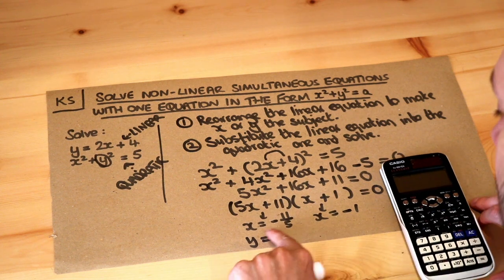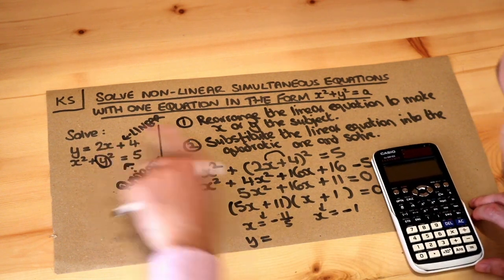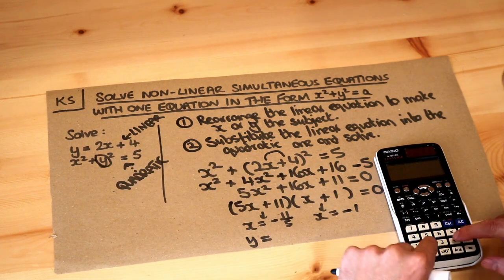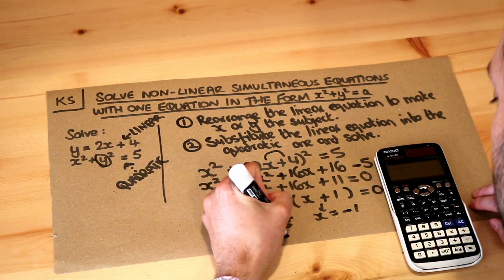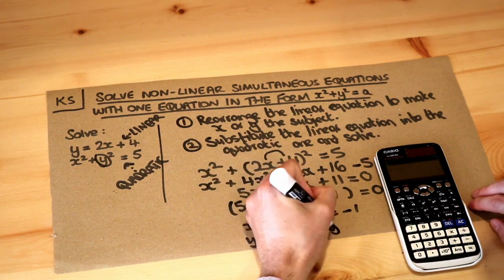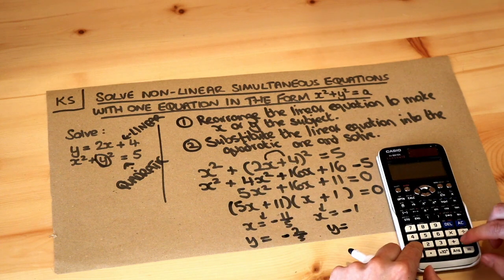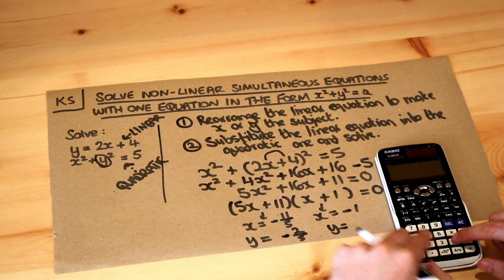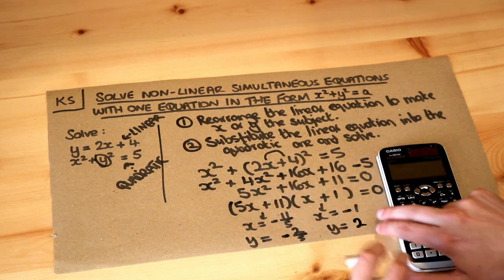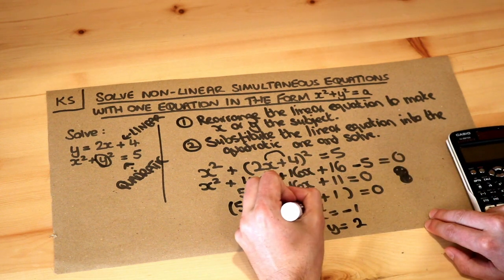All I need to do is substitute the minus 11 over 5 into this, so 2 times minus 11 fifths and then add 4, and that gives you minus 2 fifths. And then for the other one, if we sub in minus 1 into it, minus 1 times by 2 plus by 4, we get y is 2.